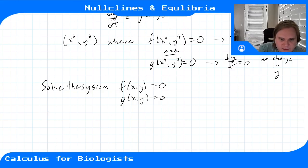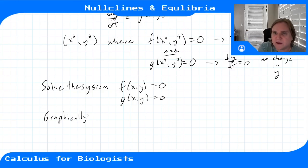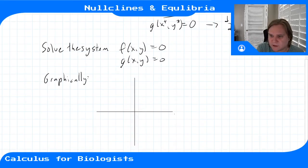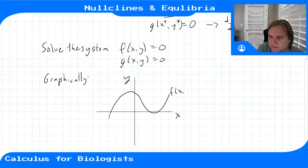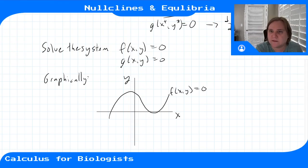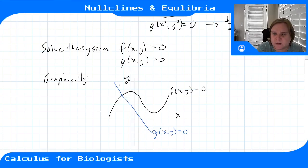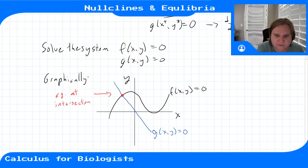A reliable way to do this is graphically — we plot x versus y, which is called the phase plane. We can plot the curve where f(x,y) = 0 and the curve where g(x,y) = 0 in a different color. The equilibrium point is found at the intersection of these two curves.